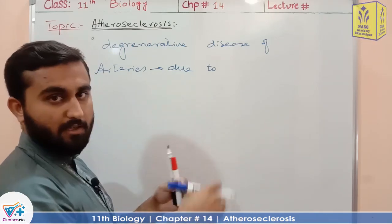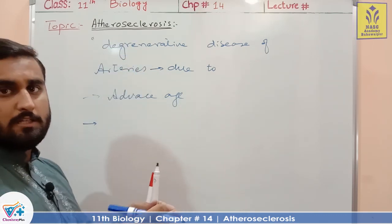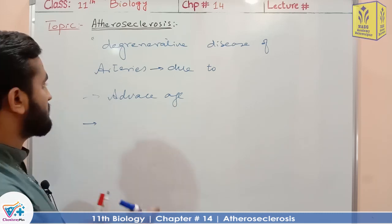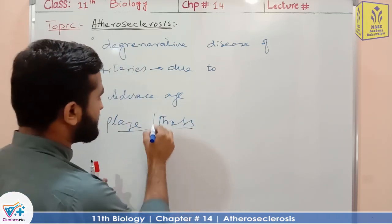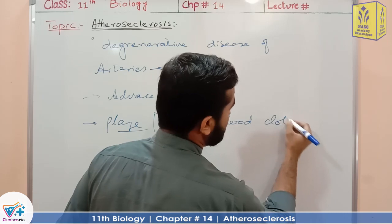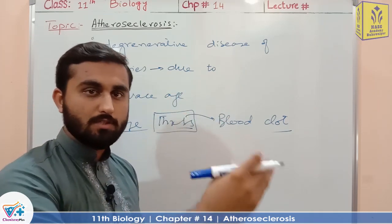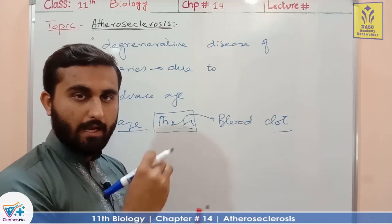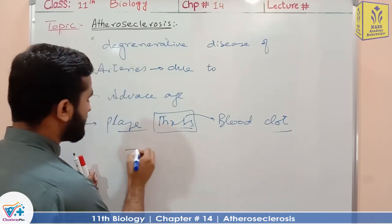This lipoid material may be converted into a blood clot, and it occurs in advanced age. This is called a thrombus. When blood clots form in the innermost or middle layer of blood vessels, especially arteries, and dislodge from their position, they become freely floating in the blood. They may then get stuck in smaller vessels.